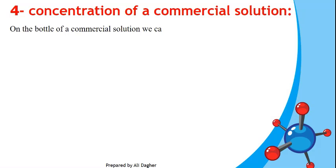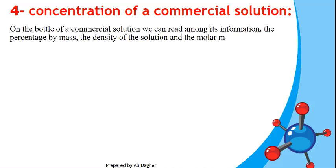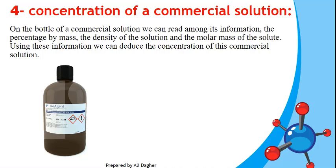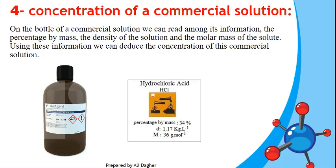On the label of a commercial solution, we find the percent by mass, the density of the solution, and the molar mass of the solute. For example, hydrochloric acid HCl: percent by mass is 34%, density is 1.17 kg/L, and molar mass of HCl is 36.5 g/mol. These three values are used to determine the concentration of the commercial solution.